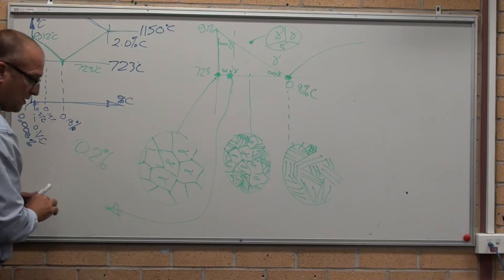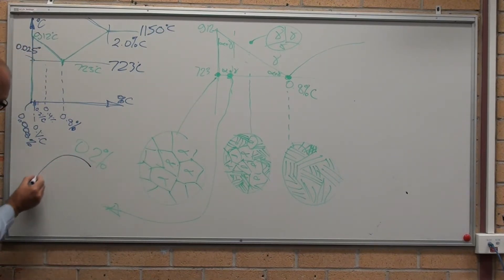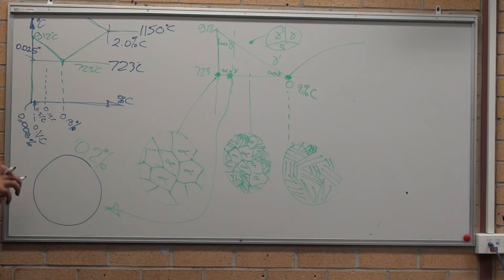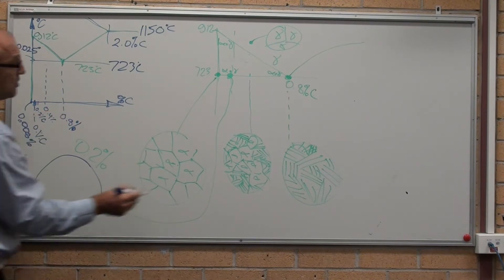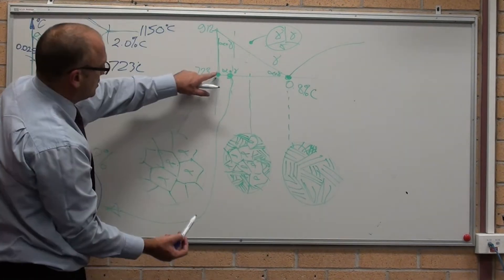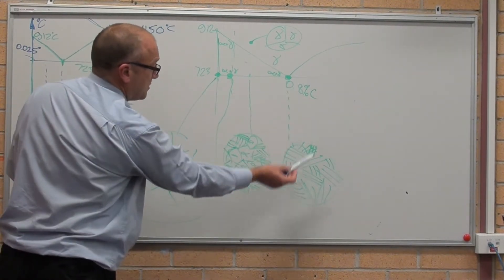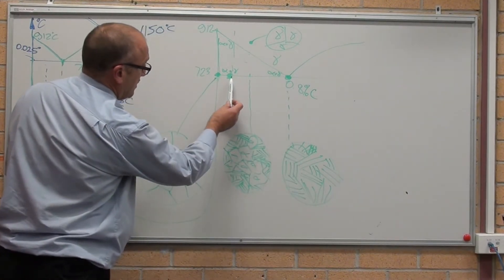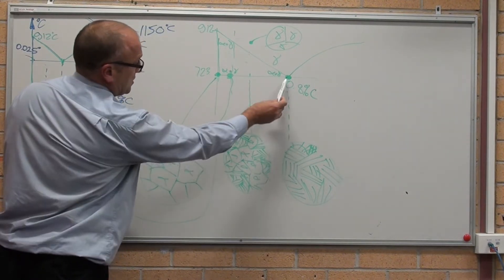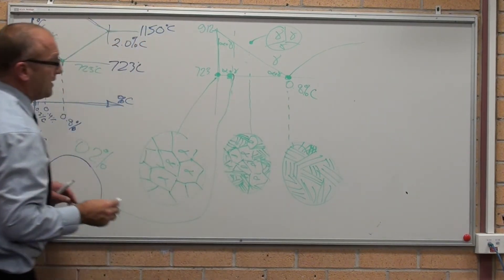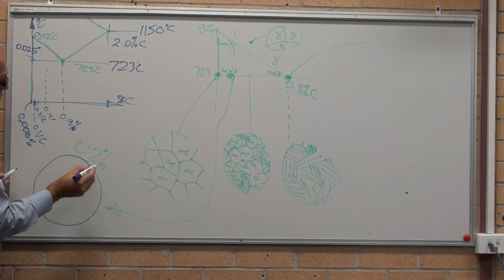0.2%, that pen's running a bit low, I'll draw in blue just to make it a bit clearer. 0.2% - 0% carbon fully ferritic, 0.8% fully pearlitic. If I'm down here at 0.2%, I'm about a quarter of the way down. So I've got here three quarters of ferrite.